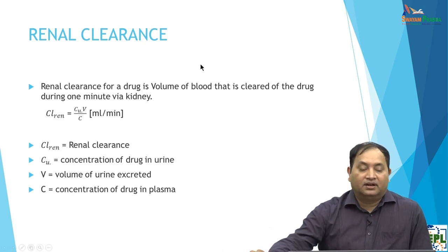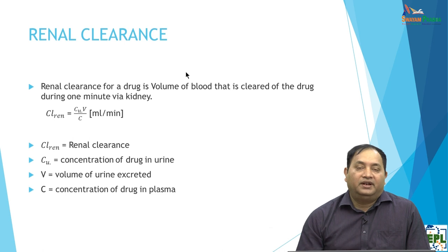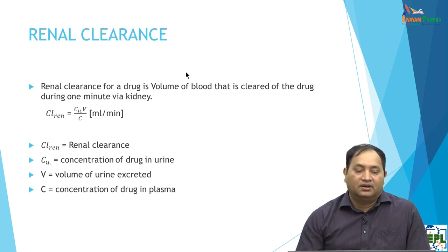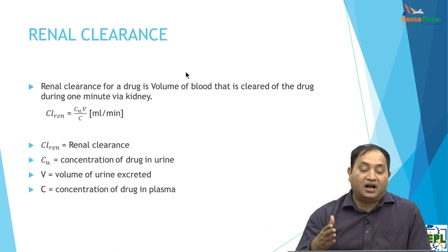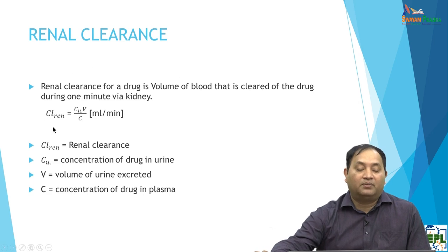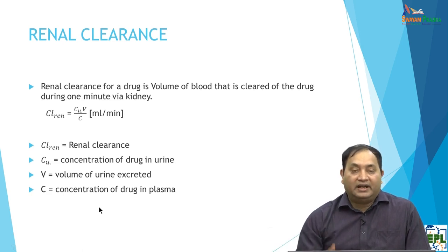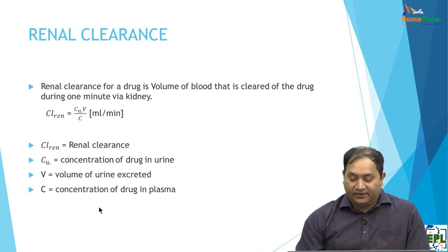When discussing excretion, an important parameter is renal clearance. Renal clearance tells you what volume of the drug in the body is cleared per minute via the kidney. The formula is: Renal Clearance = (Concentration of drug in urine, Cu × Volume of urine per unit time) / Concentration in plasma. This gives you the clearance in ml per minute.